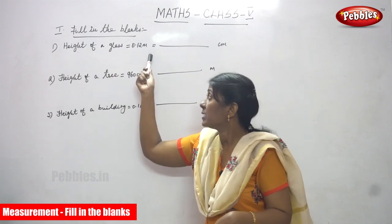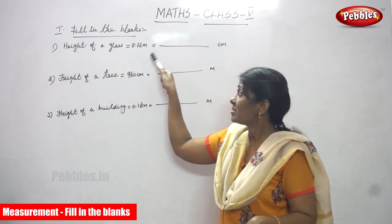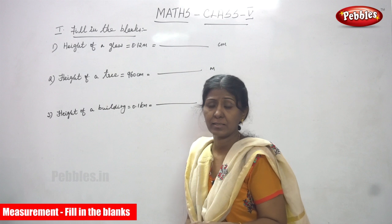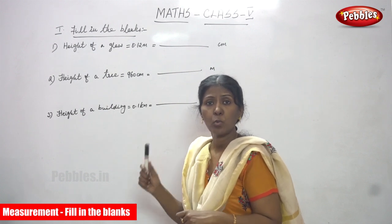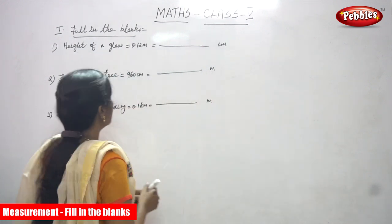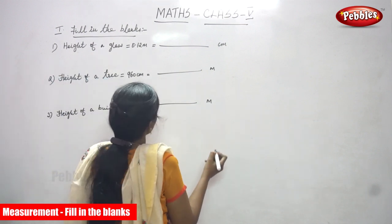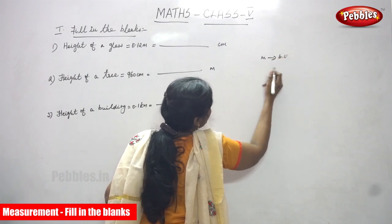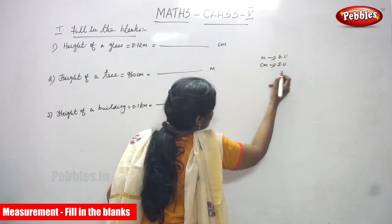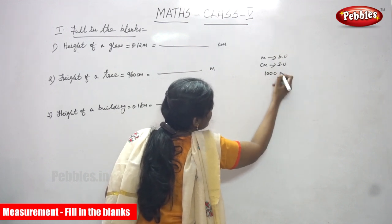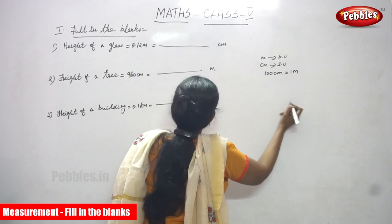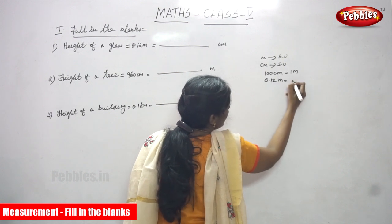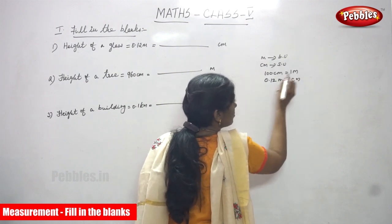Now we are going to see fill in the blanks. The first question is: the height of a glass is 0.12 meter. You have to convert this into centimeters. Meter is a bigger unit and centimeter is a smaller unit. 100 centimeters is equal to 1 meter, so we need to find how many centimeters 0.12 meter equals.